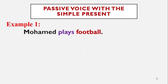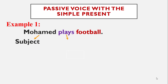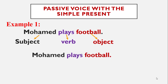Now let's go to passive voice with the simple present. Example number one: Mohammed plays football. This is the active voice, which means the active voice starts with subject, then the verb, and then the object. So Mohammed is the subject, plays is the verb, and football is the object. This is the normal order of the active voice.